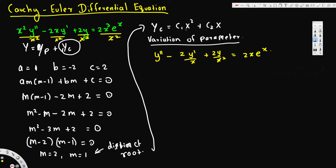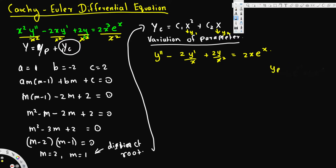From the complementary solution we pick y₁ = x² and y₂ = x. We'll use the Wronskian to find u₁ and u₂, since the particular solution has the form yp = u₁y₁ + u₂y₂. We need u₁′ = W₁/W and u₂′ = W₂/W.